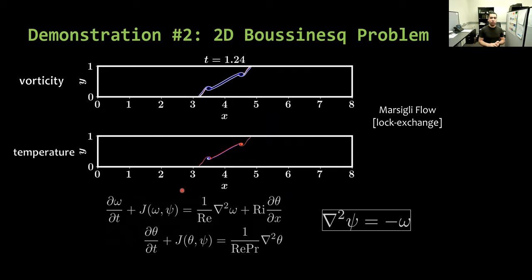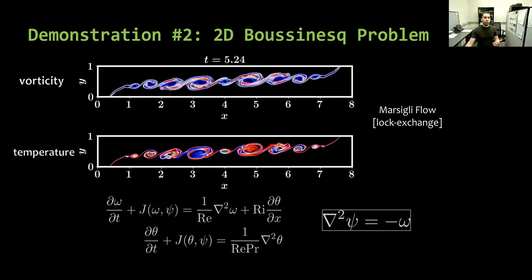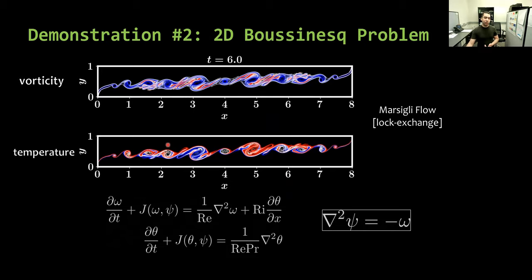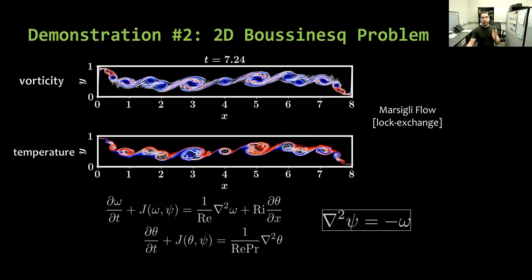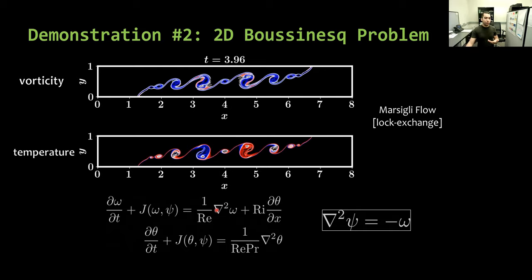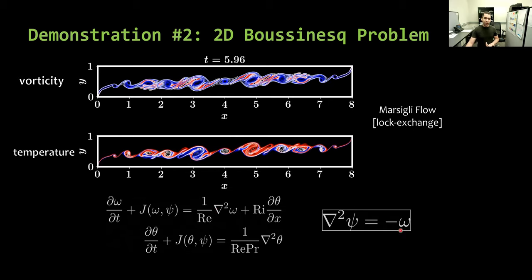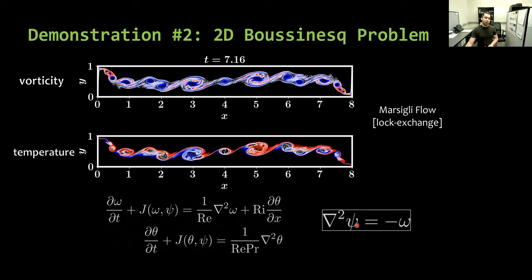Second demonstration is a really interesting one, which is the 2D Boussinesq problem or thermal convection flow problem. Initially, we have a fluid with different temperature in these two partitions. In particular, we have cold fluid on the right and hot fluid on the left, with a vertical barrier at x equal to 4. At time equal to 0, this barrier is removed immediately. So the cold fluid starts to slide below the hot fluid, and they start mixing.